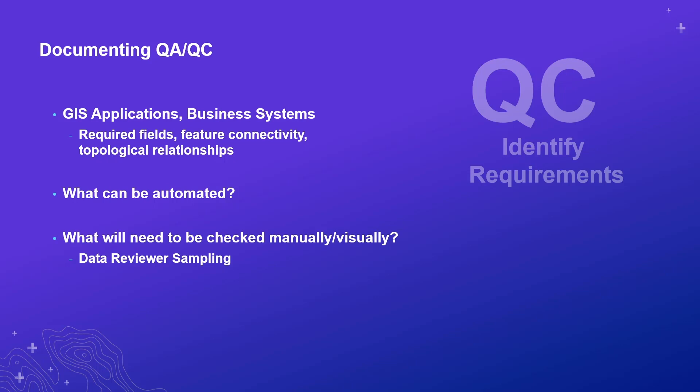When developing your QA plan, you'll need to think about the requirements for your data. Think about your GIS applications — what are you going to be doing? If it's going to be tracing or routing, you'll want to make sure that data is good. For example, tax parcels shouldn't be overlapping each other — that would be one of the rules. If you have business systems using the GIS database, you may also need rules to support those systems, and there may be fields that must be populated.